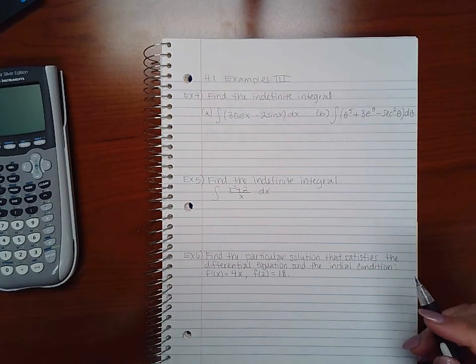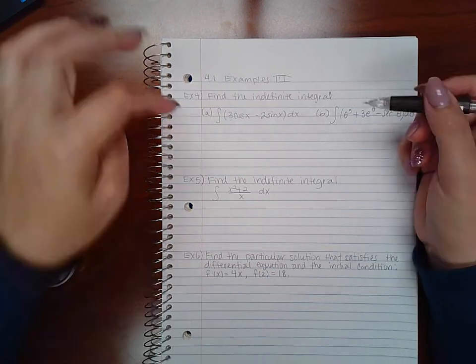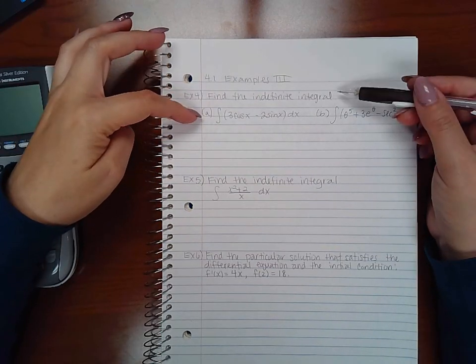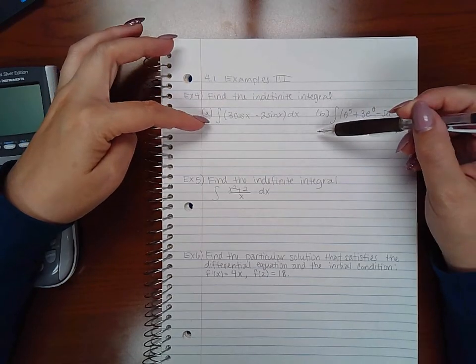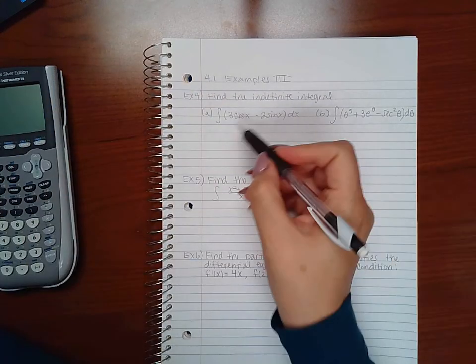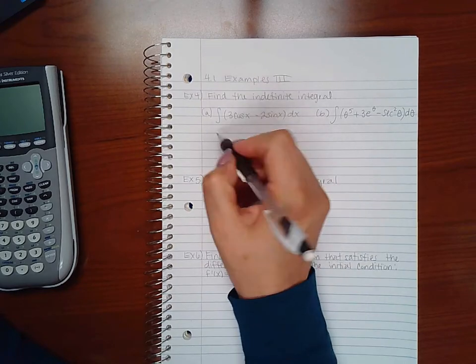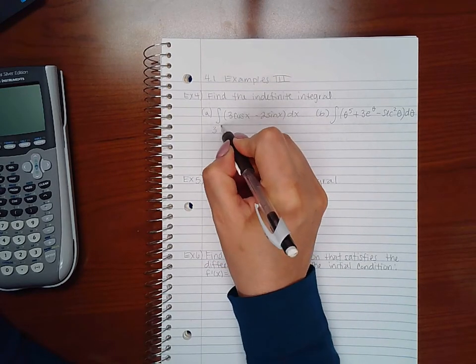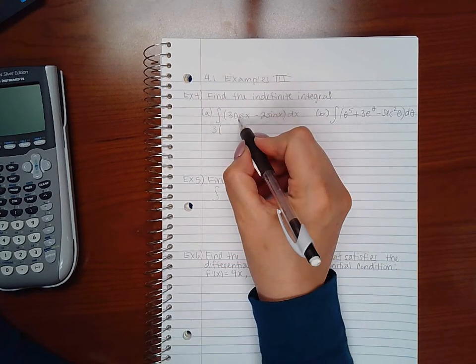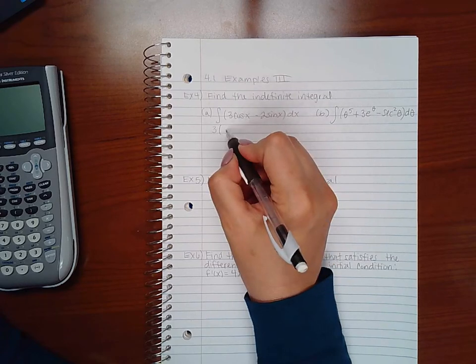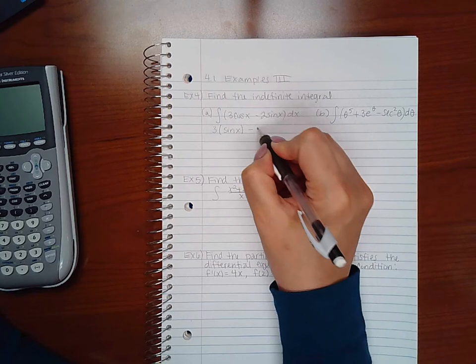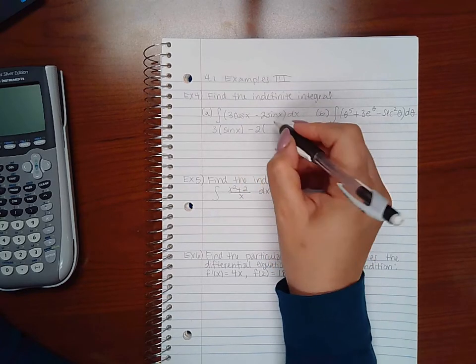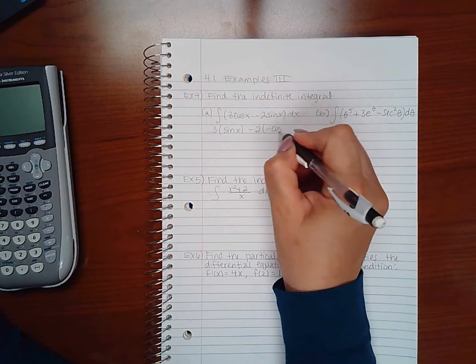Okay, this is examples part three. Example four says find the indefinite integral and it has two terms. We're going to integrate these now. Three is just a constant multiplier and according to our integration rules, the antiderivative of cosine is sine x, and the antiderivative of sine x is negative cosine x.